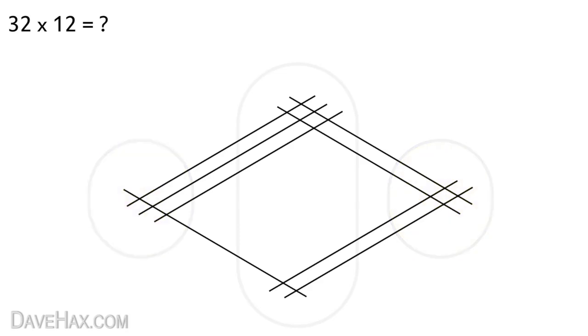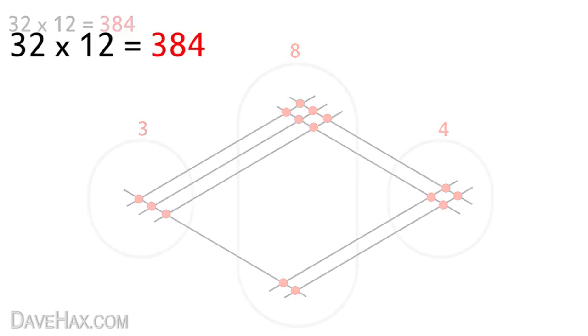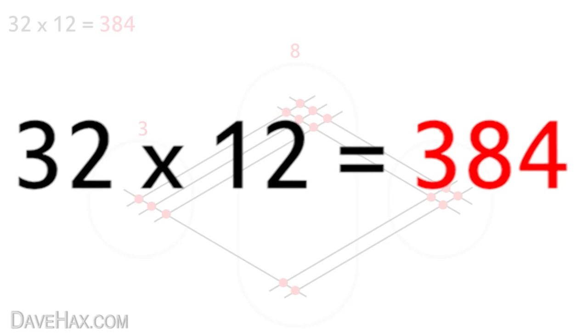And starting from the right, start counting the dots: 1, 2, 3, 4. 1, 2, 3, 4, 5, 6, 7, 8. Write that here, and finally 1, 2, 3. 384. There we have our answer. Simple.